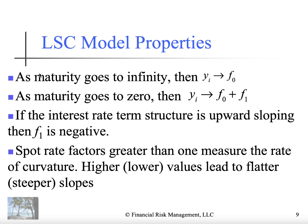To interpret these variables: as maturity goes to infinity, the yield tends to the fitted level amount. As maturity goes to zero, the yield converges to the level plus the slope coefficient. If the interest rate term structure is upward sloping, then F1 is typically negative. The spot rate factor greater than one measures the rate of curvature, and higher values lead to a flatter term structure. We're going to look at this in great detail with R code as well as examples.